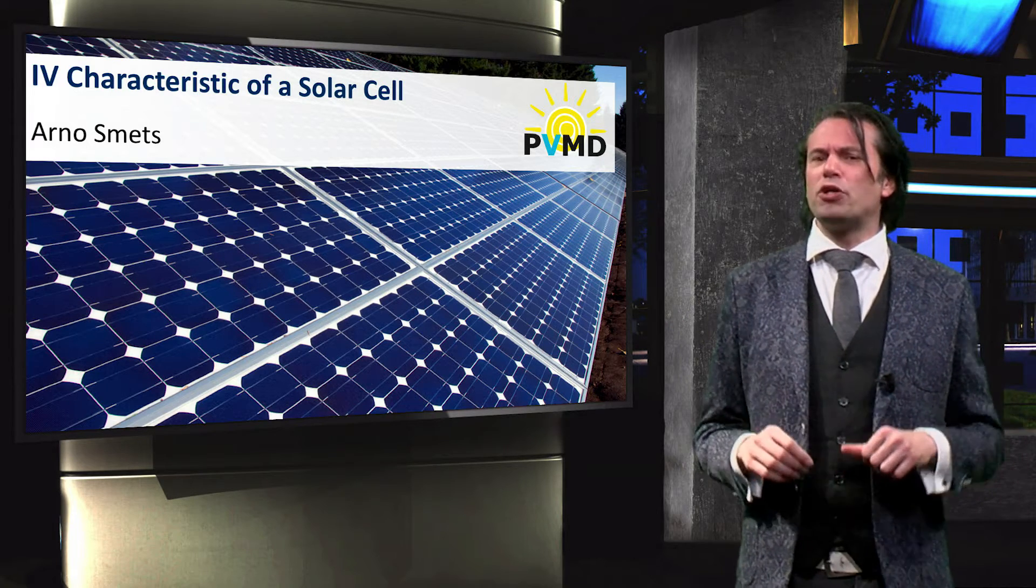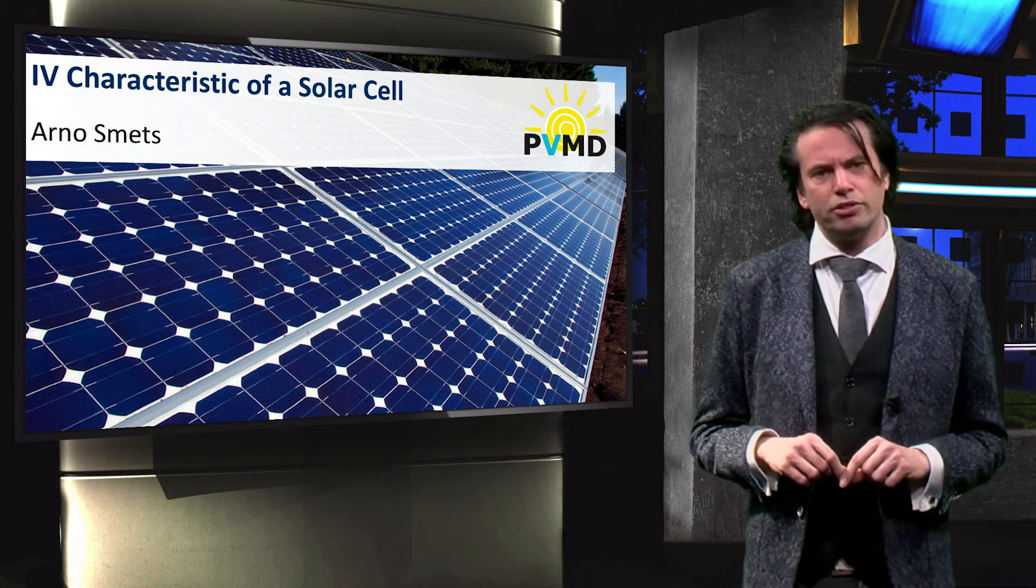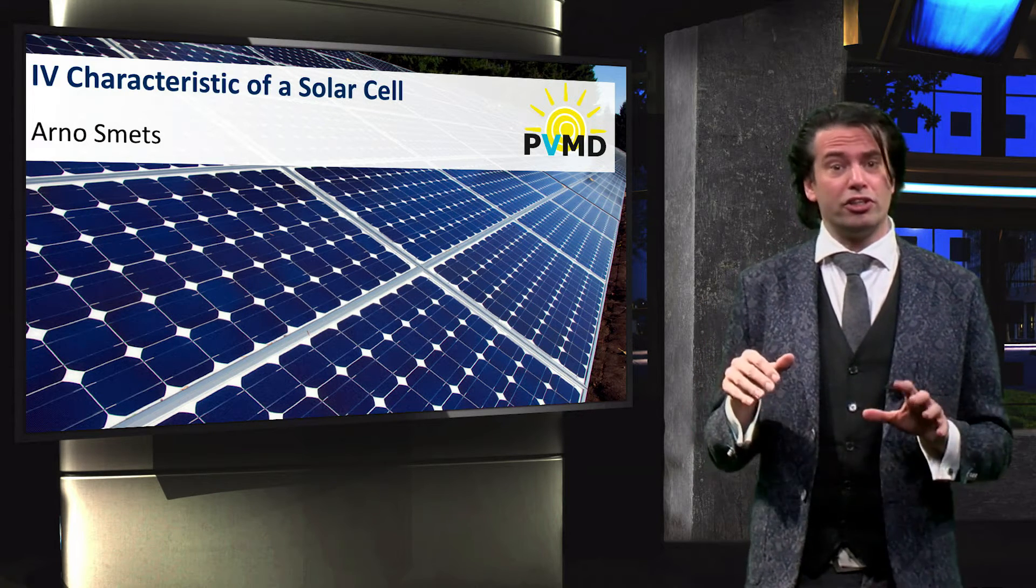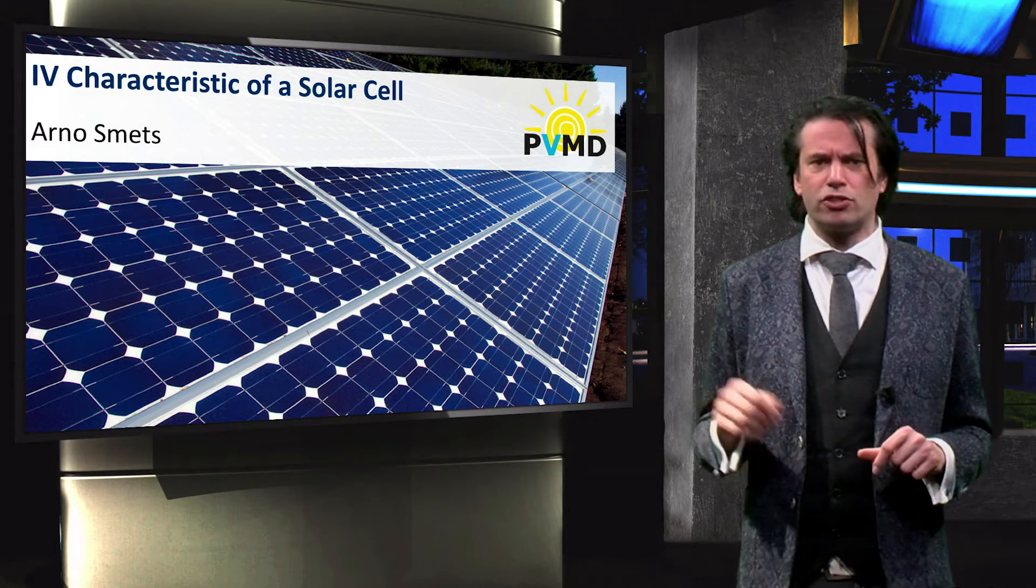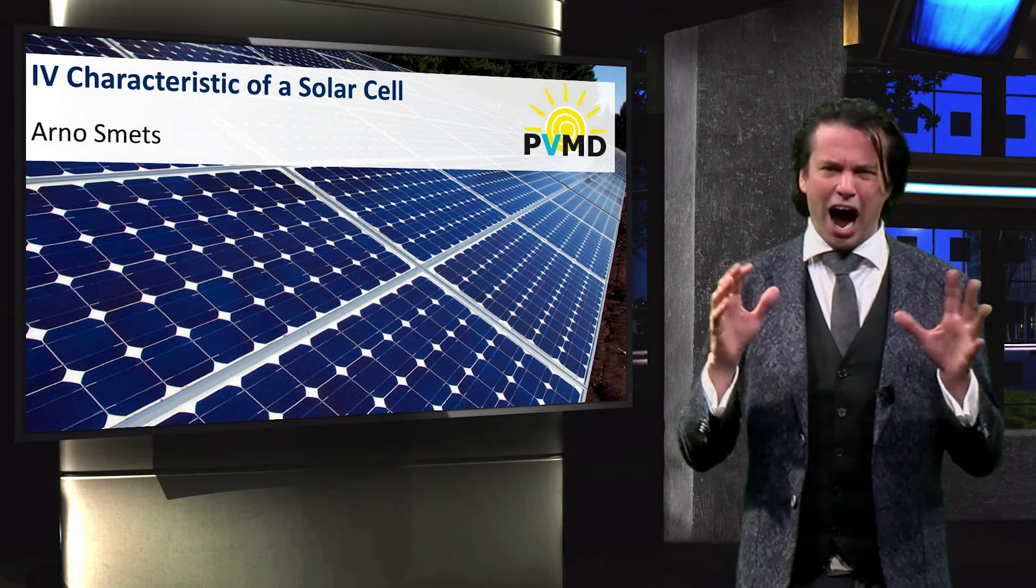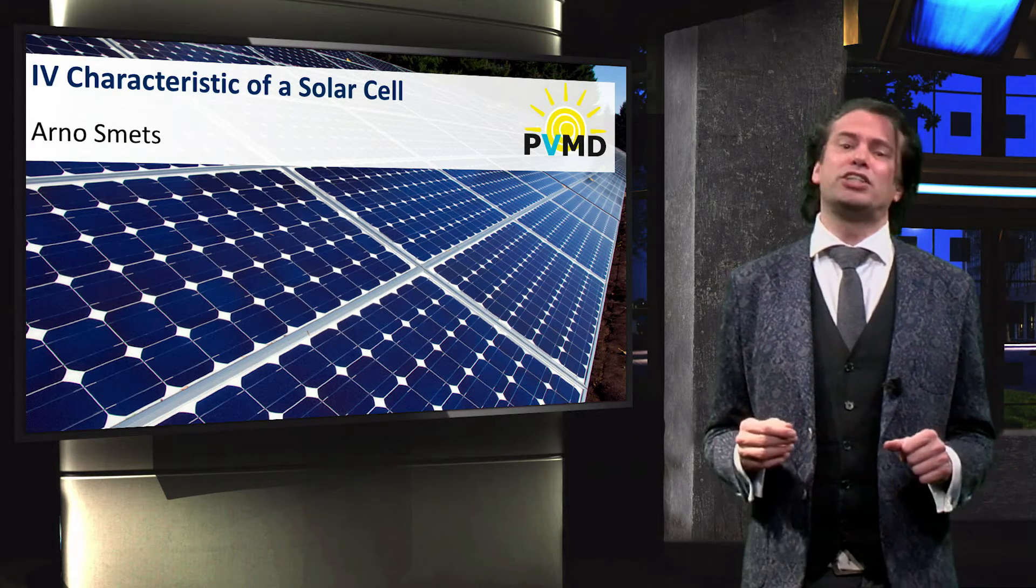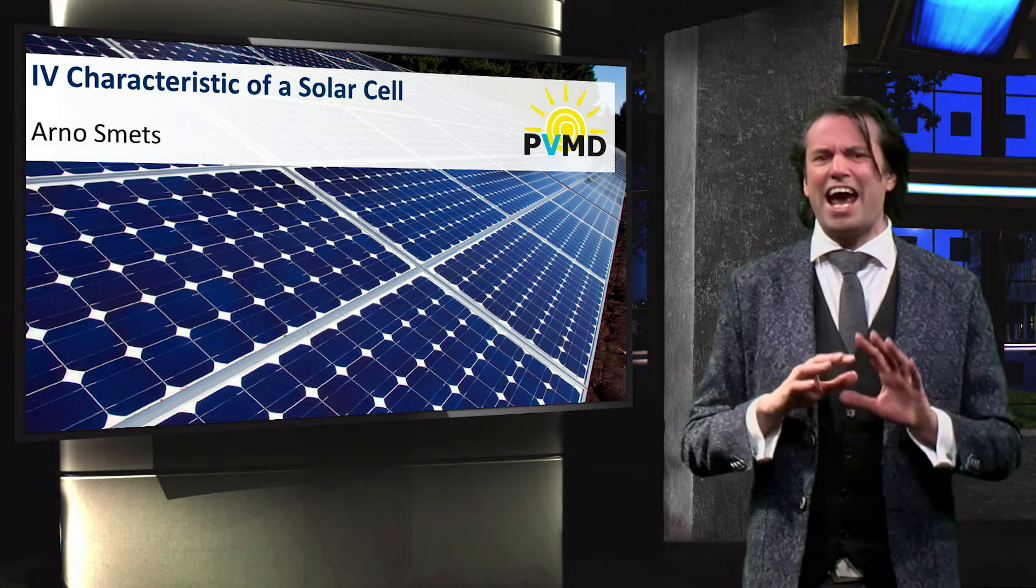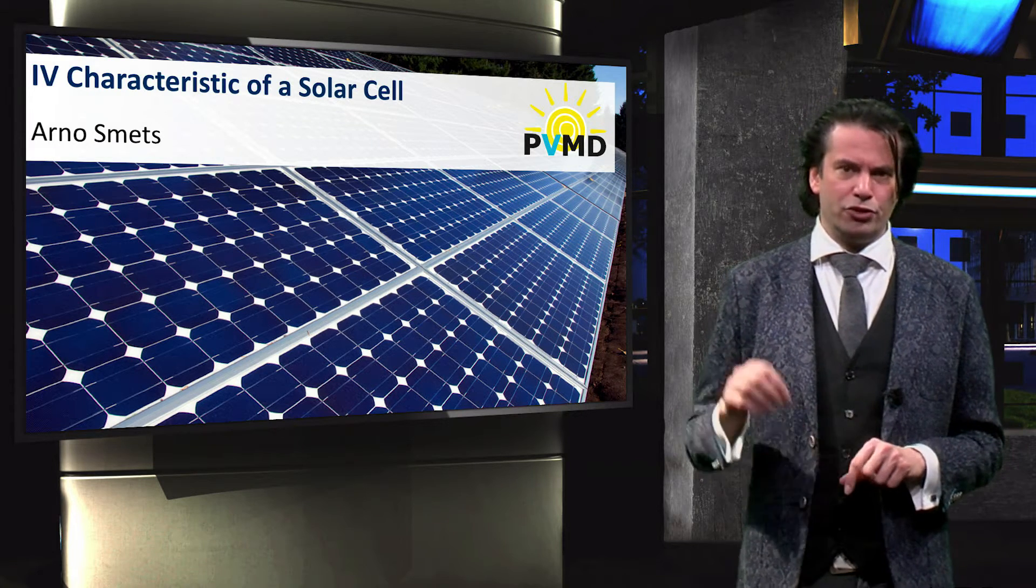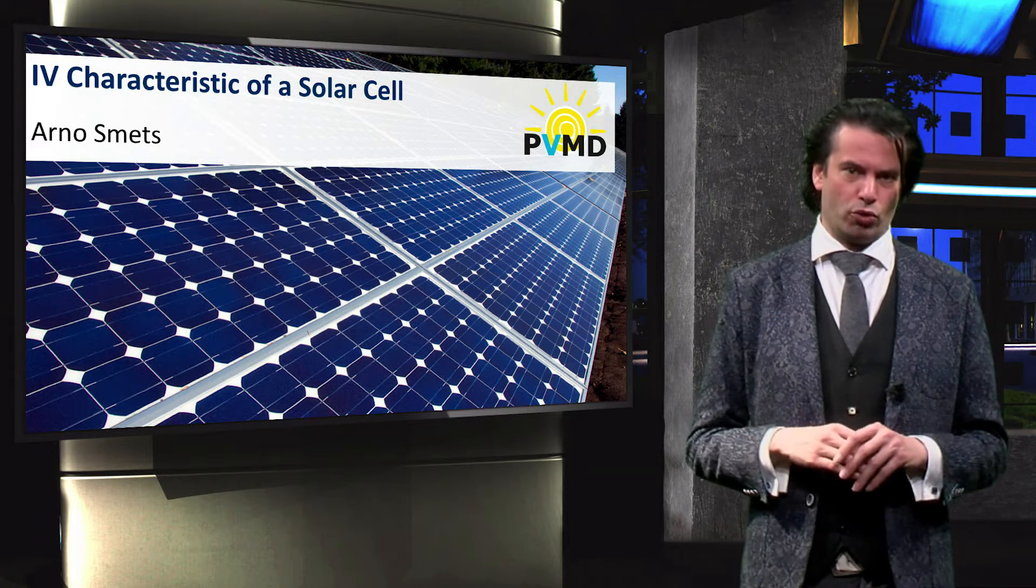In the next few weeks we will go deep into all the operating principles of solar cells. We will discuss the semiconductor physics and optics governing their behavior, and you will really get a sense of how solar cells work. But let's start by trying to understand an important aspect of any electrical component, the current voltage or IV characteristics of the solar cell.